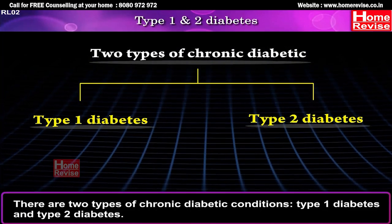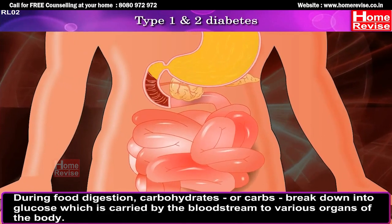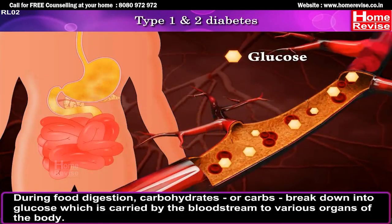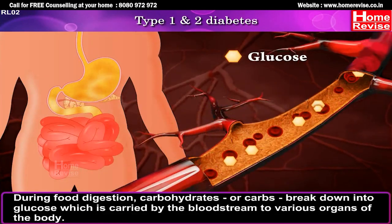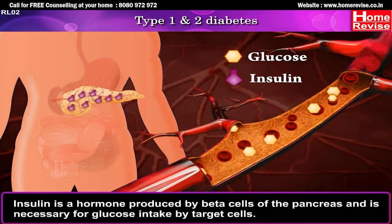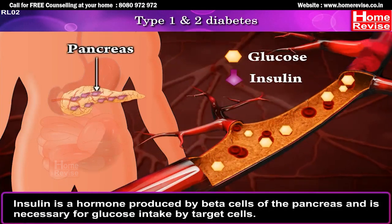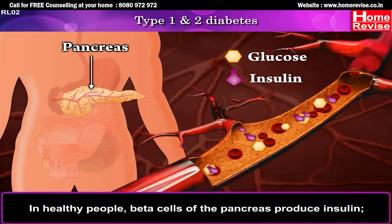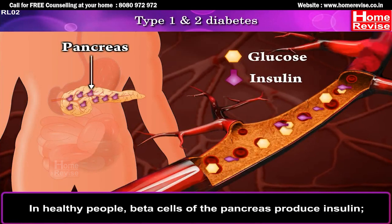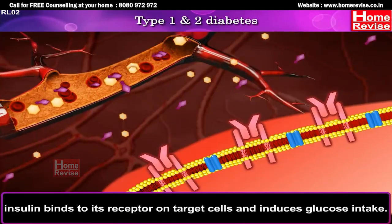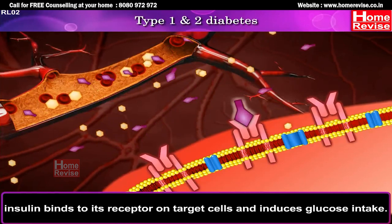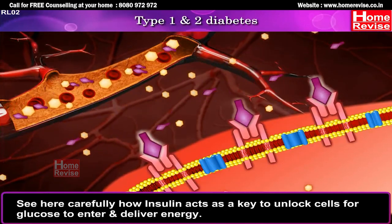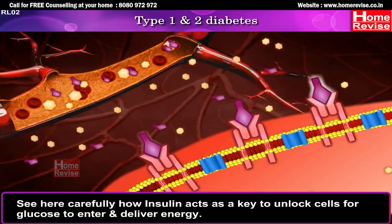During food digestion, carbohydrates or carbs break down into glucose, which is carried by the bloodstream to various organs of the body. Insulin is a hormone produced by beta cells of the pancreas and is necessary for glucose intake by target cells. In healthy people, beta cells of the pancreas produce insulin. Insulin binds to its receptor on target cells and induces glucose intake. See here carefully how insulin acts as a key to unlock cells for glucose to enter and deliver energy.